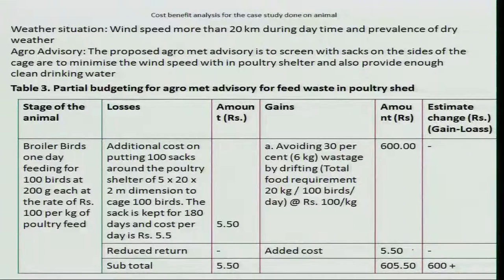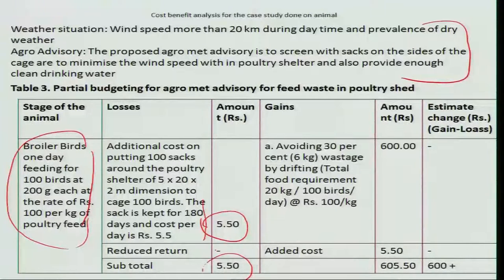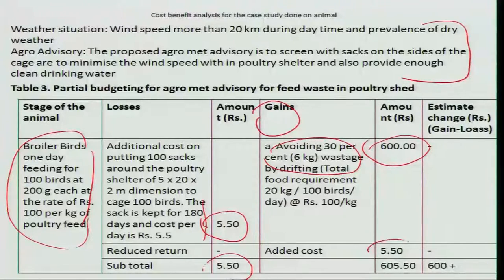Now let us consider broiler poultry: one day's feeding for 100 birds at 200 grams each at the rate of 100 rupees per kg of poultry feed. The additional cost involves putting 100 shade nets around a poultry shelter of 5×20×2 meter dimension for a cage of 100 birds. The shade net is kept for 180 days and costs 5.5 rupees per day, so the subtotal cost is 5 rupees and 50 paise. The return in terms of gains is 600 rupees; the added cost of putting shade nets is 5 rupees and 50 paise, giving a total of 605 rupees and 50 paise.